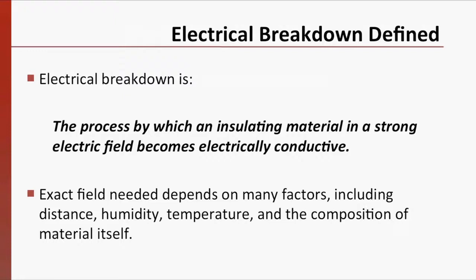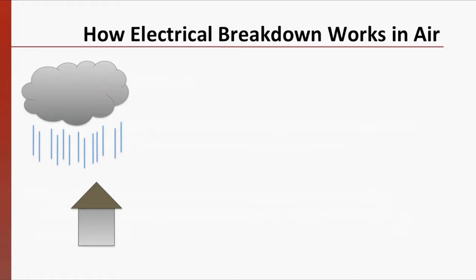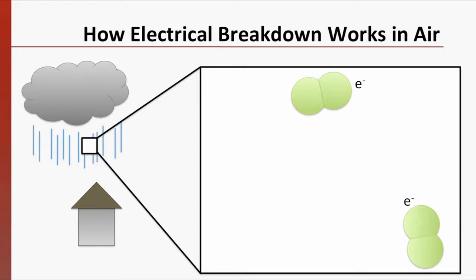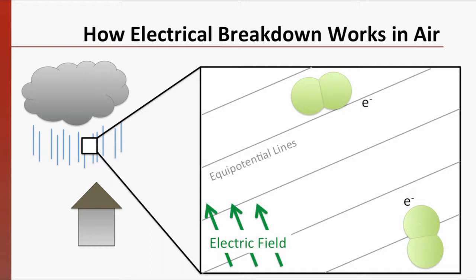Consider this house in a thunderstorm. If we zoom in on the air above the house, we can see the molecules of gas in the air. Thunderstorms involve strong electric fields and high electric potential differences. We can represent those on our diagram. Imagine that one electron is pulled from its atom by the strong electric field. Because the electron is negatively charged, it will accelerate against the electric field and will eventually collide with another atom.